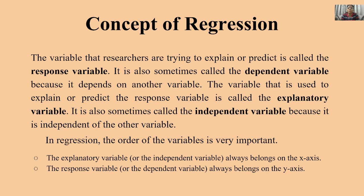In regression, the order of the variables is very important. The explanatory variable and the independent variable always belong on the x-axis — the horizontal axis. The dependent variable, or response variable, is always on the y-axis — the vertical axis. You can make decisions about the independent variable, but the dependent variable responds to those changes.